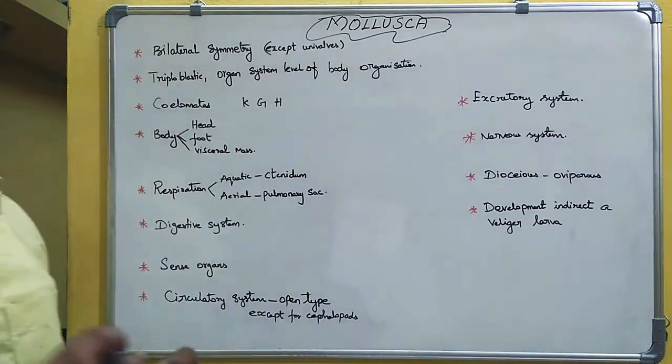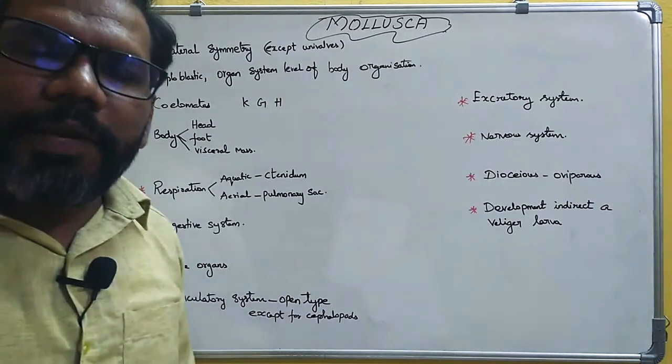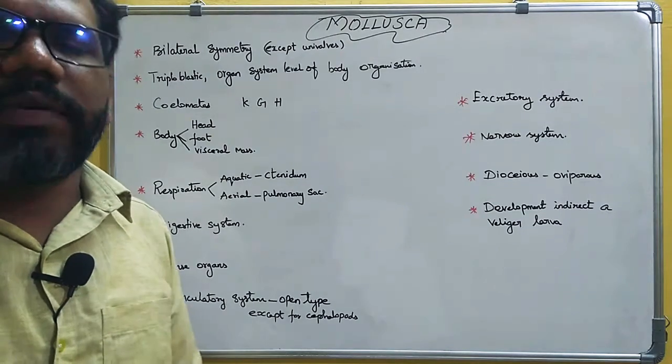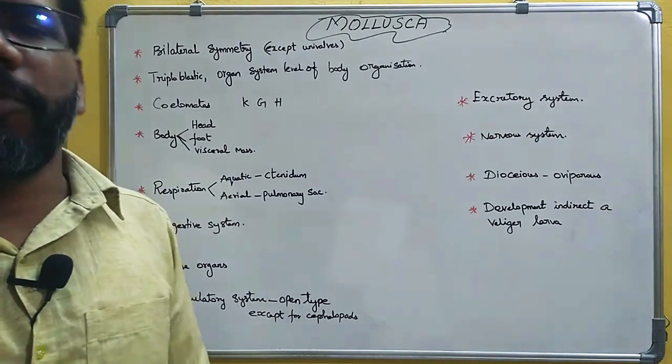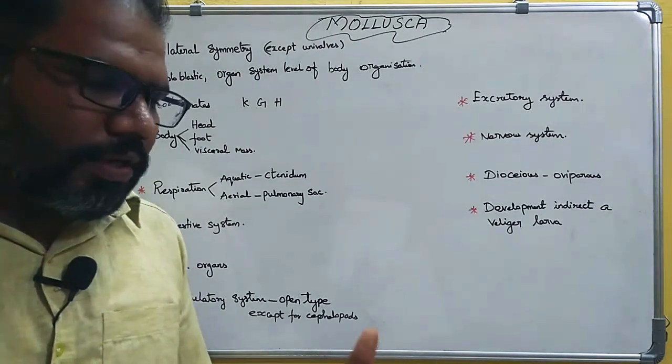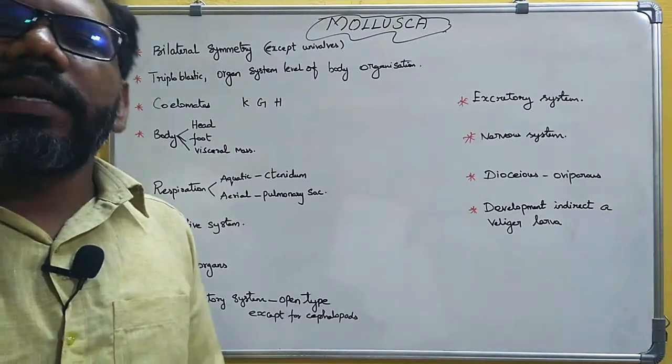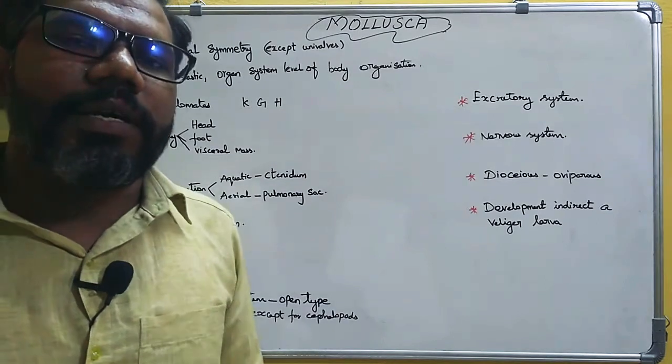What is the habitat of mollusca? They are aquatic — both freshwater and marine — as well as terrestrial. So habitat is both aquatic and terrestrial.